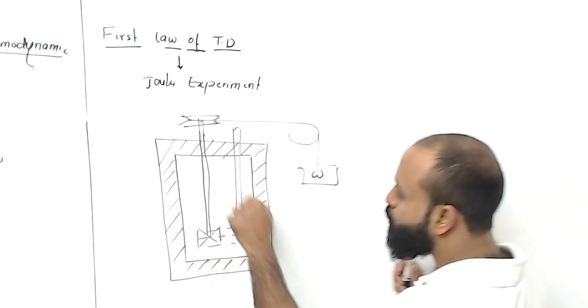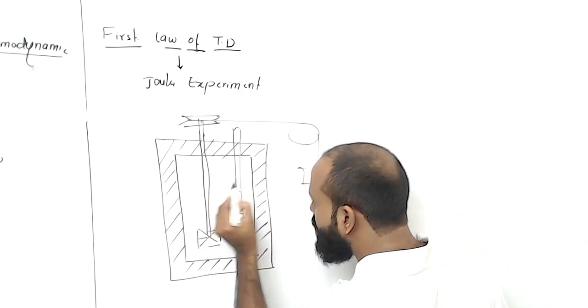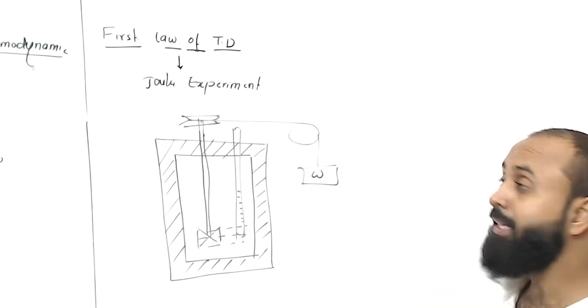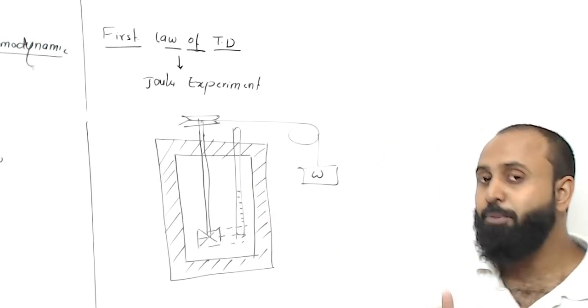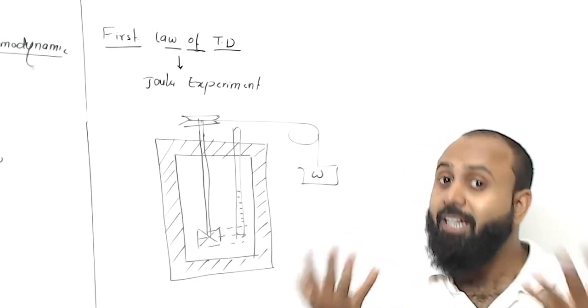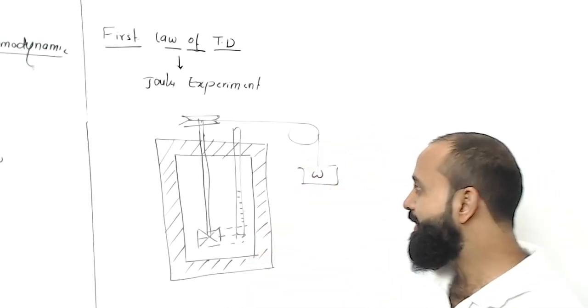Now, when the stirrer rotates, Joule experienced that the thermometer reading was changing. He concluded that if the temperature inside is changing, why is it changing? Temperature changes when you add heat - food gets hot when you heat it, and food gets cold when you remove heat from it.